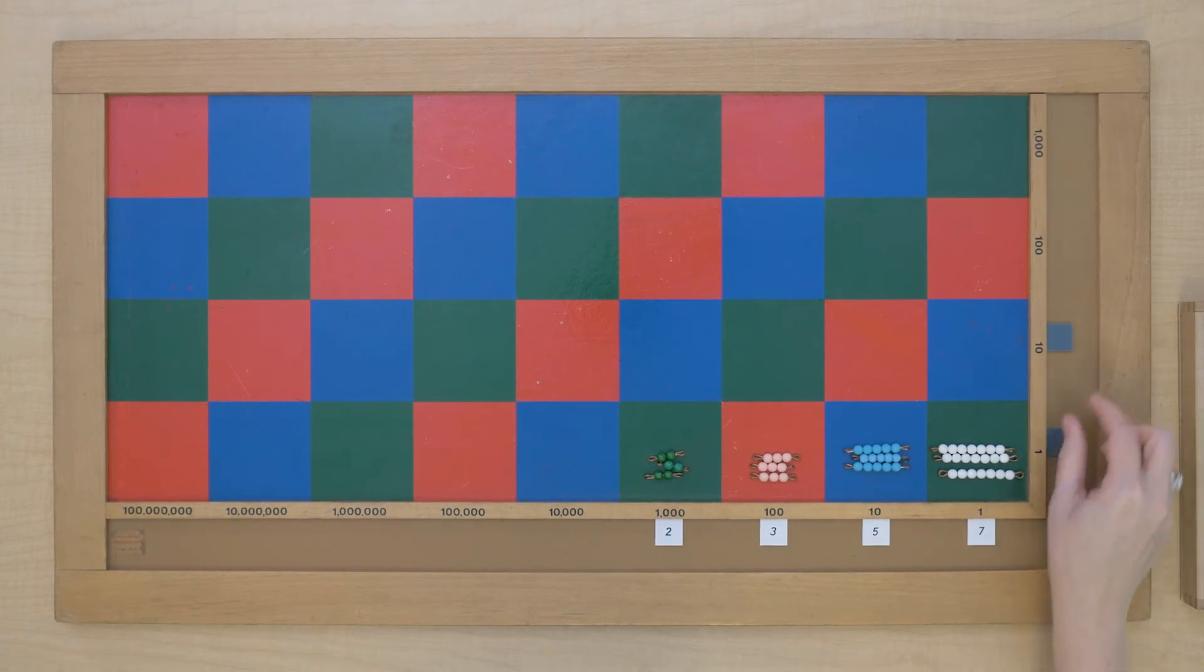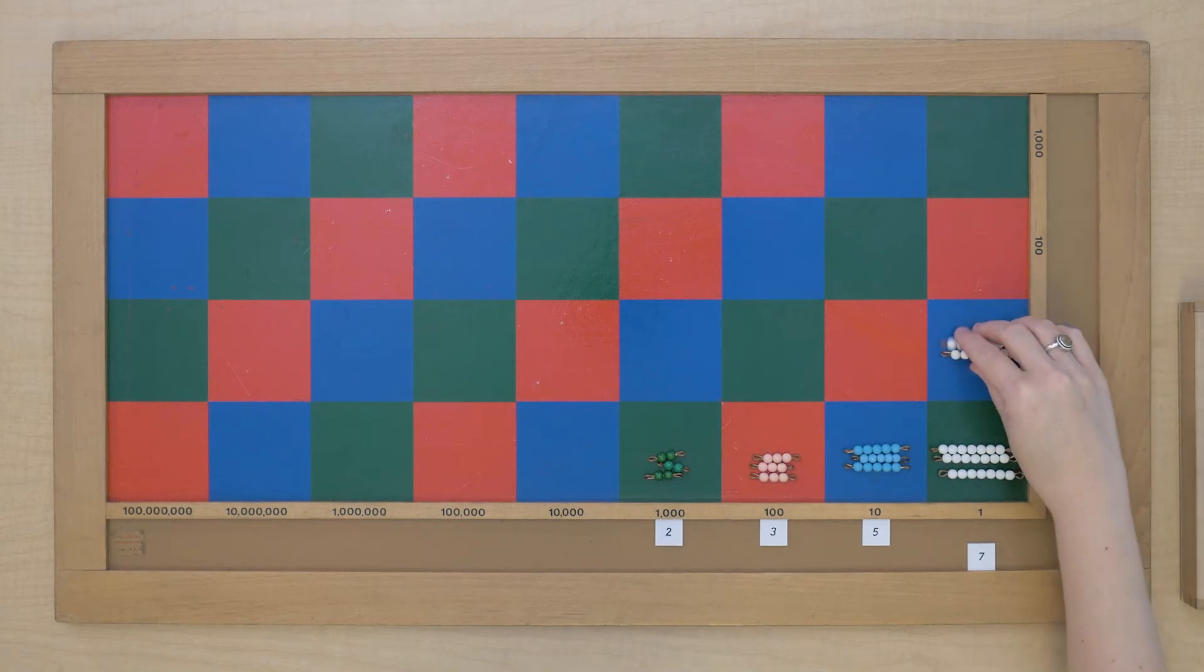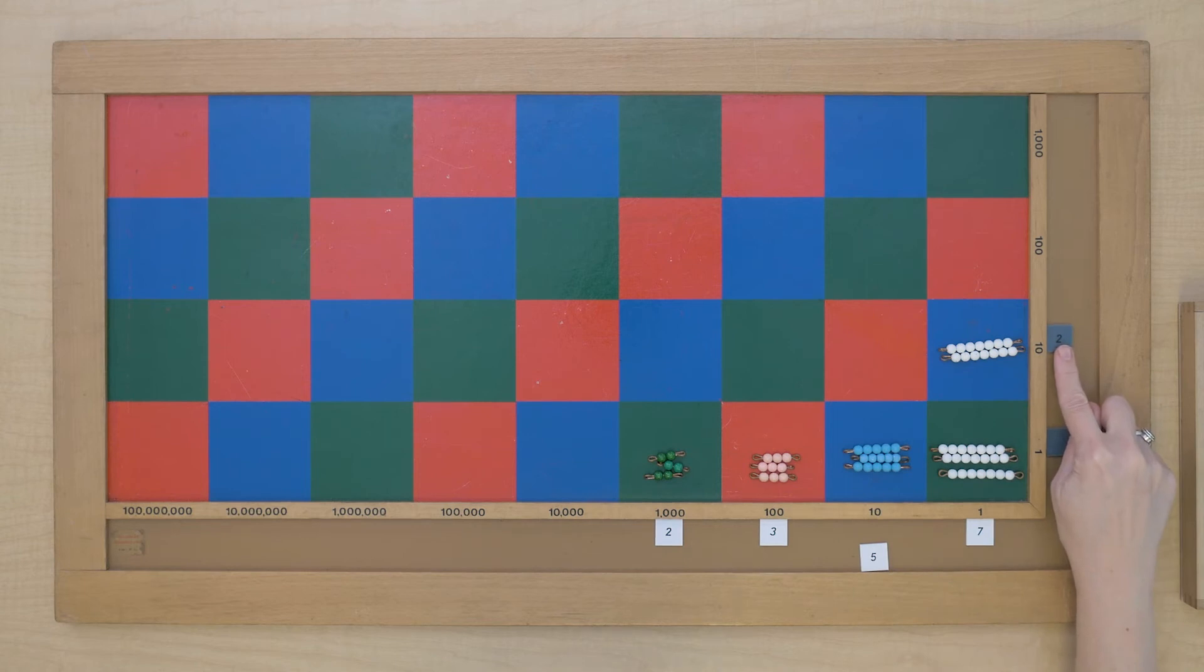So now we can turn it over and multiply by our tens multiplier. So seven taken two times. Five taken two times.